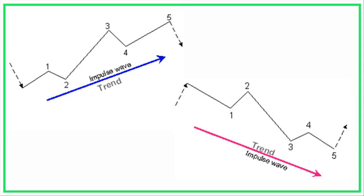In a later stage Elliott used Fibonacci numbers together with the waves to predict price targets. A trend signals the main direction in which prices are moving. Corrections move either against the main trend or sideways. In Elliott Wave terminology, these are called impulse waves and correction waves.